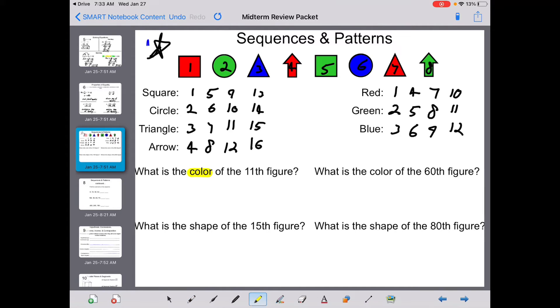So they're going to ask, what is the color of the 11th figure? Well, if I look at 11 on the color side, I see green. And it says, what is the shape of the 15th figure? I look at 15. The figure's triangle. Now, we're not going to write out 60 and 80 figures. There's no reason to do so.